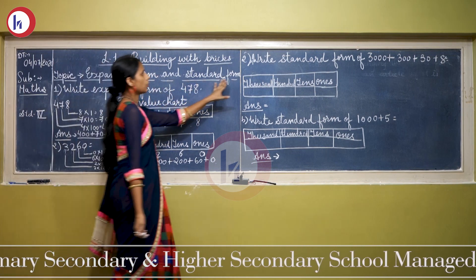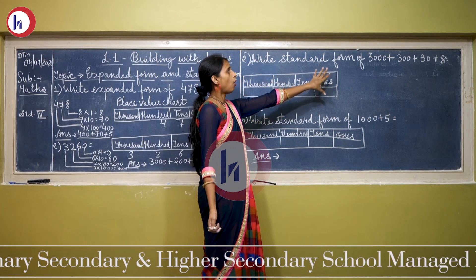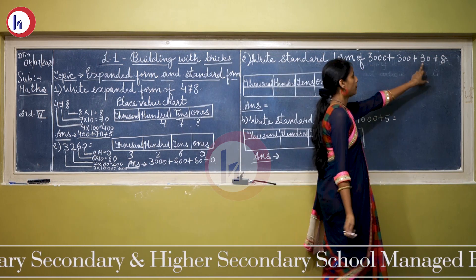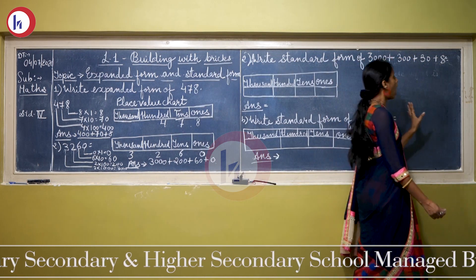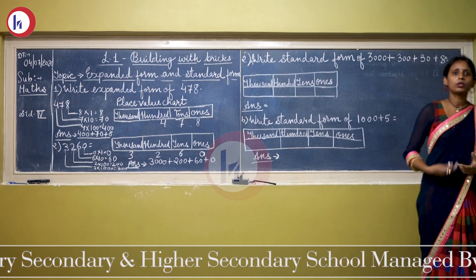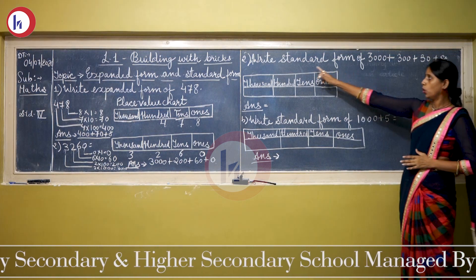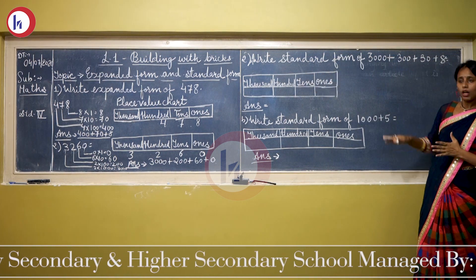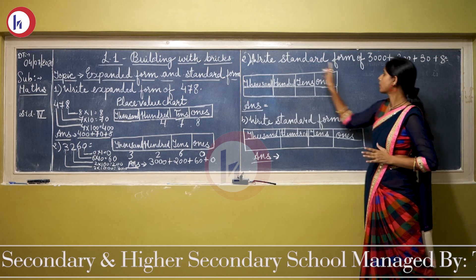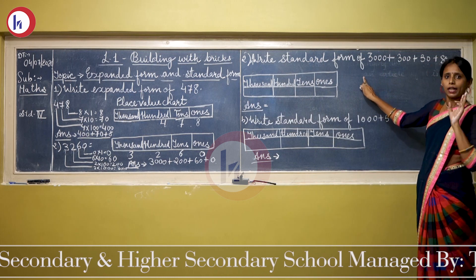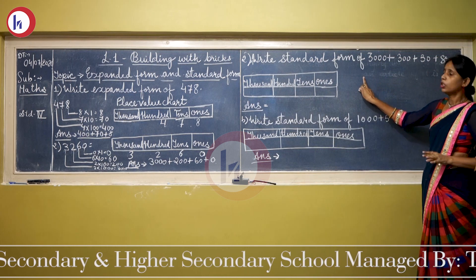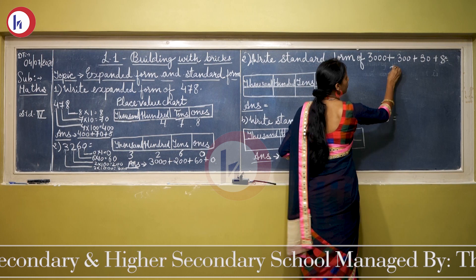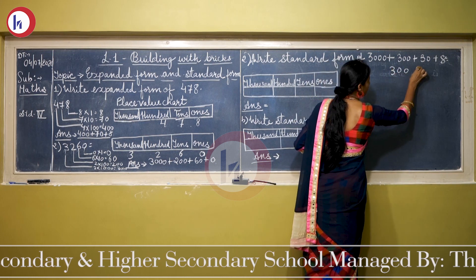Now come to the next question: write the standard form of 3000 + 300 + 30 + 8. Standard form is the short form of an expanded form. There are two methods to find it. The first method is to add them.